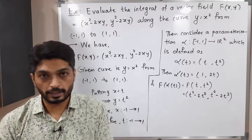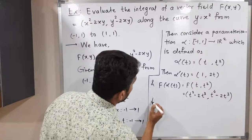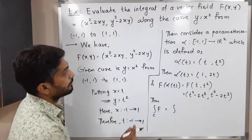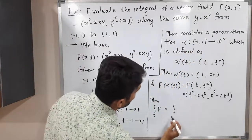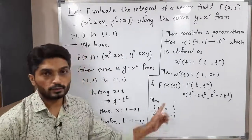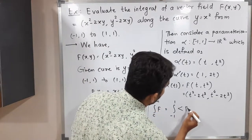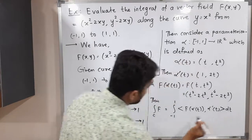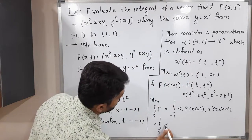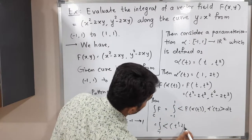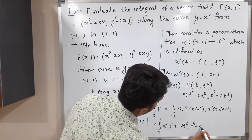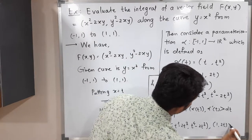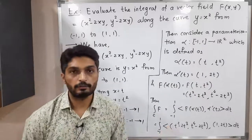Now let us apply the definition of the line integral of a vector field and find the value. The integral of f over the curve C equals the integral from −1 to 1 of the inner product of f(α(t)) and α'(t) dt. Substituting the values: the integrand is the inner product of (t² − 2t³, t⁴ − 2t³) and (1, 2t) dt.